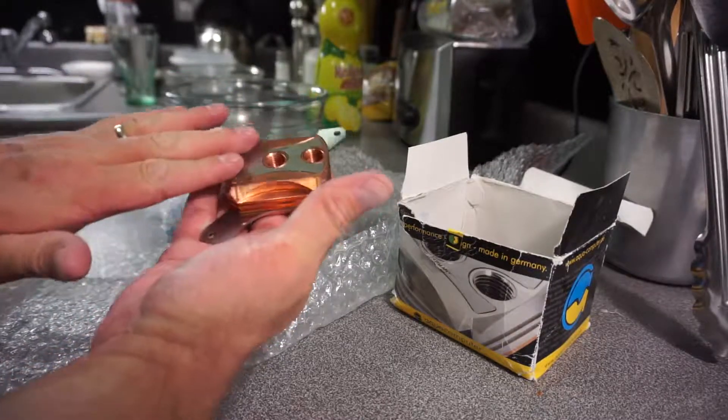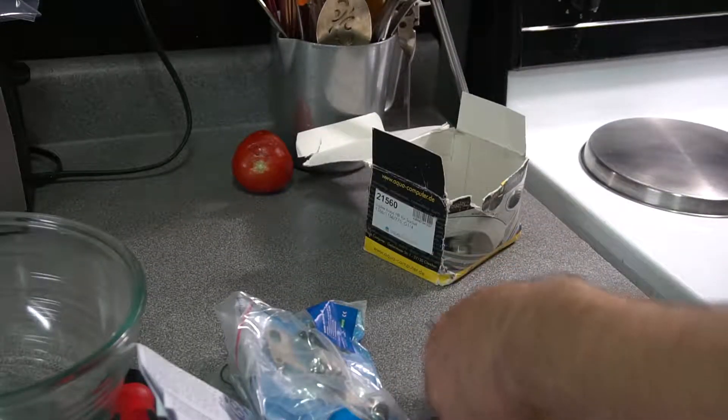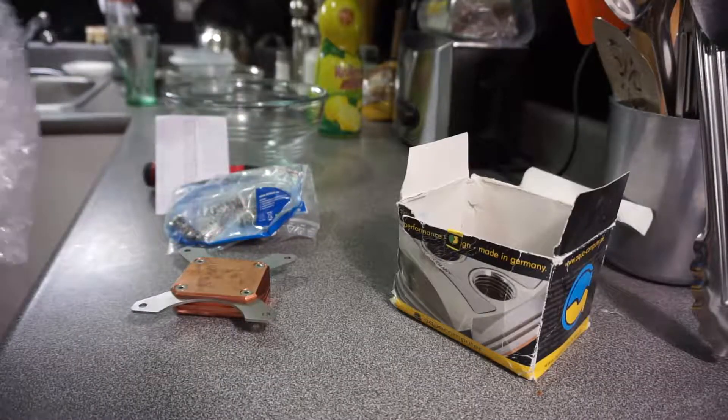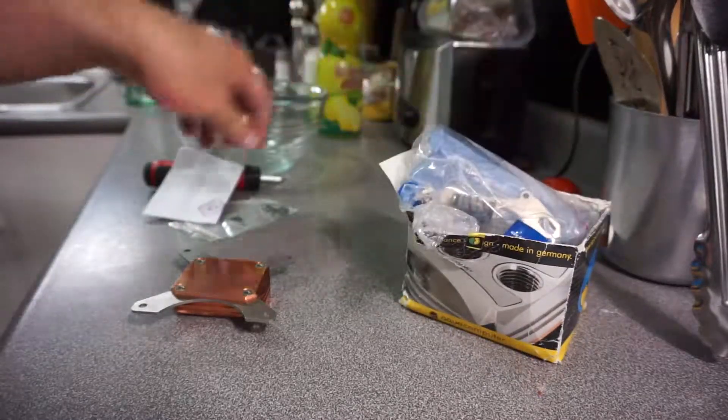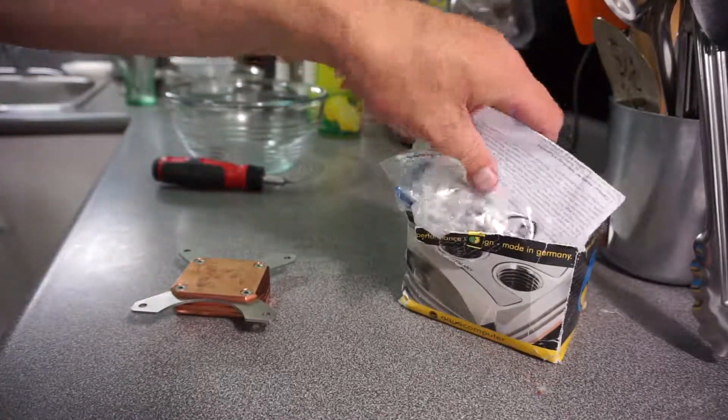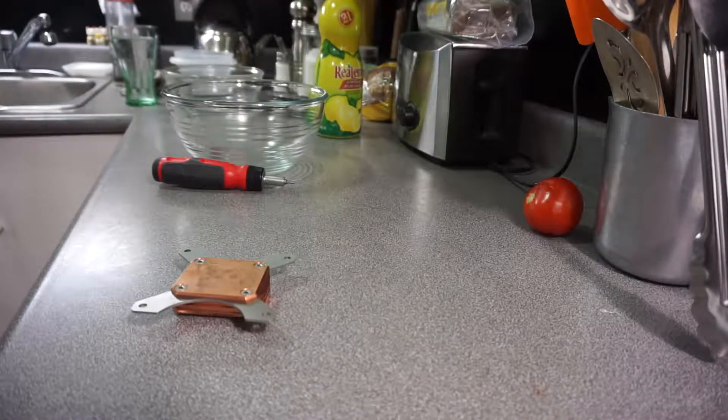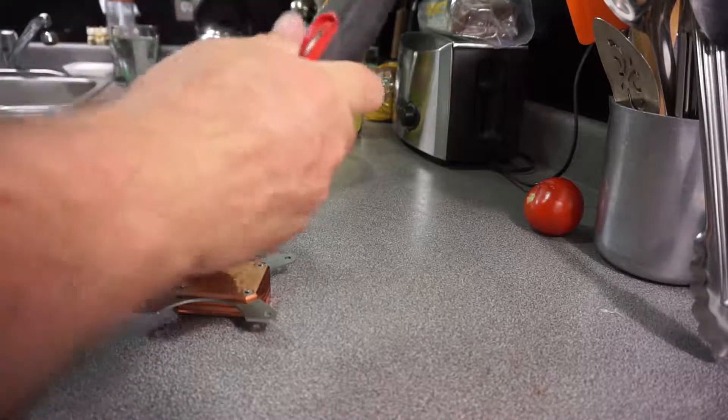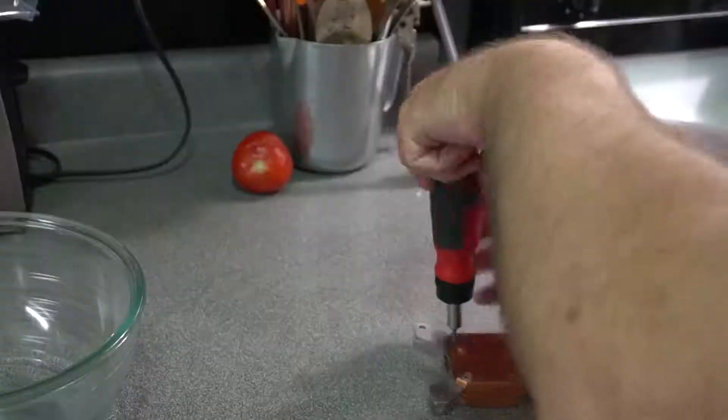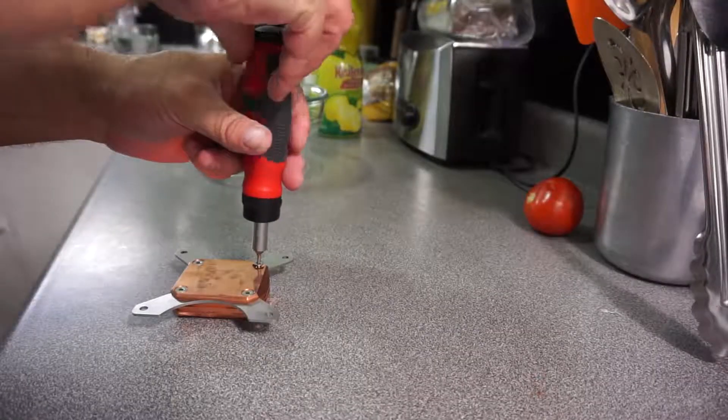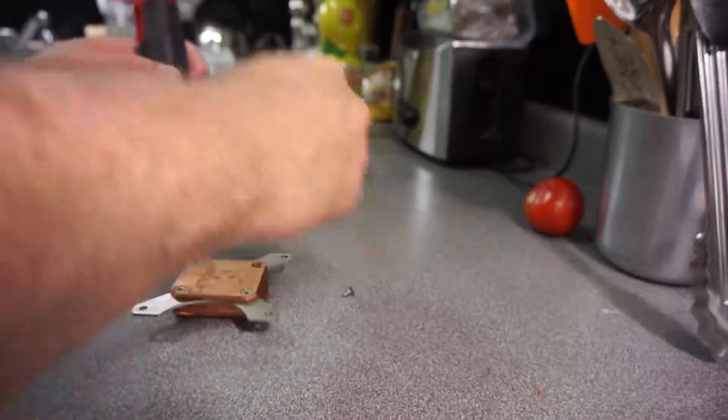I tried to clean this already, but I put it back in a box for safekeeping in anticipation of getting the other equipment that I needed to put my loop together. So today I am going to disassemble this and use the old lemon juice trick to clean the block.